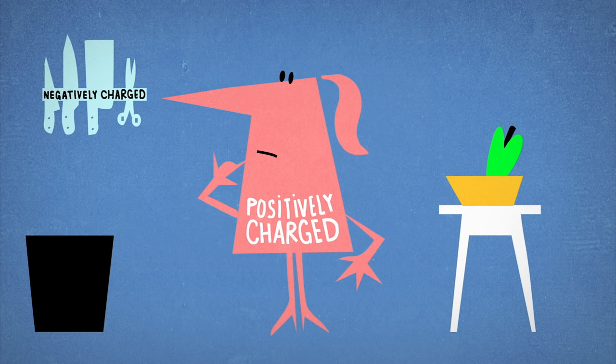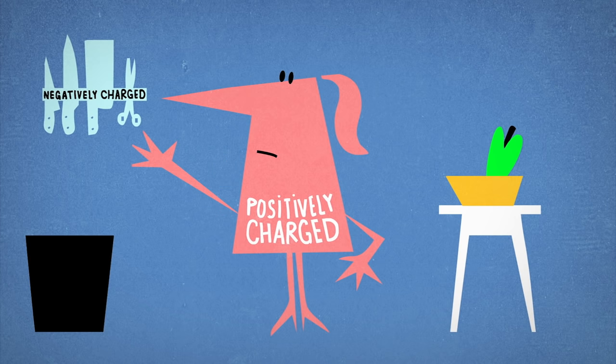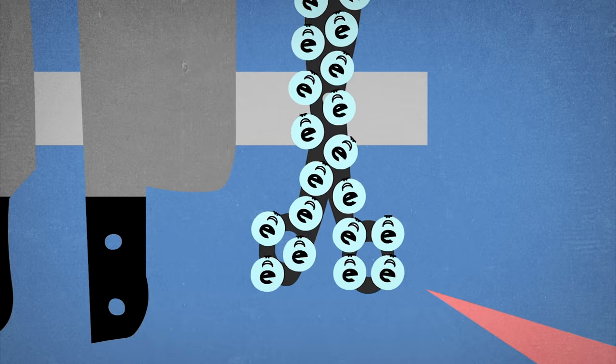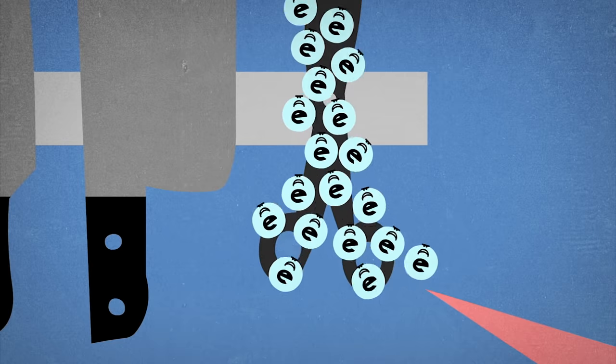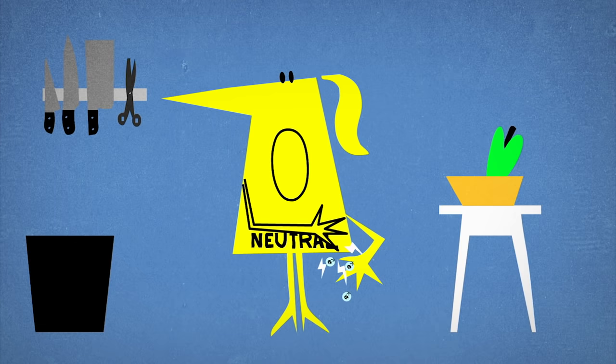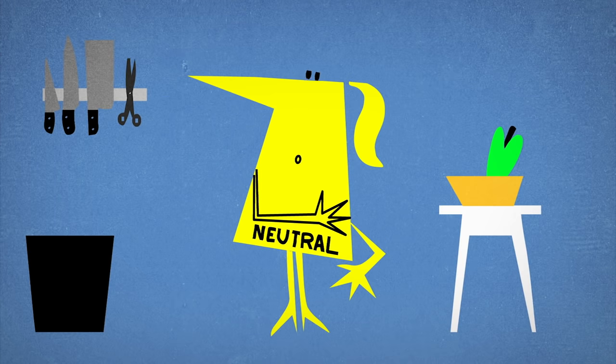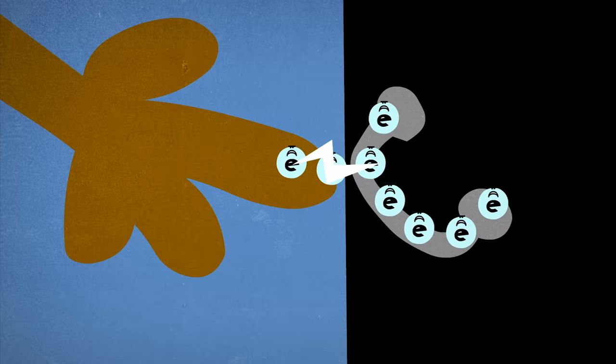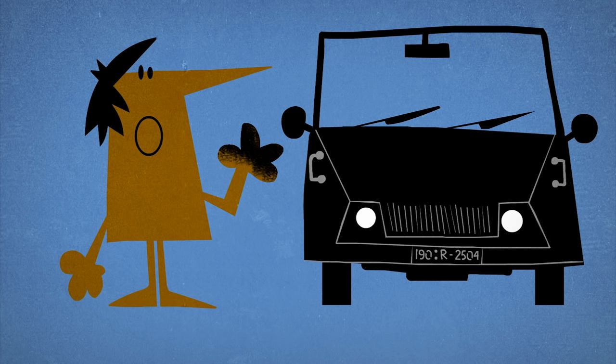So when one of these newly charged bodies comes into contact with another material, the mobile electrons will take the first chance they get to go where they're most needed, either jumping off the negatively charged object or jumping onto the positively charged one in an attempt to restore the neutral charge equilibrium. And this quick movement of electrons, called static discharge, is what we recognize as that sudden spark.